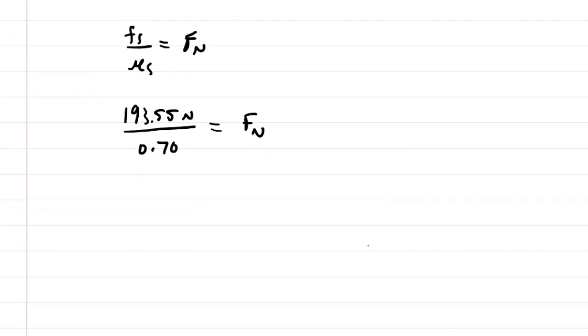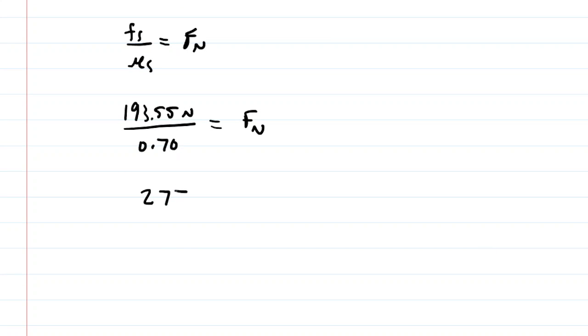We put that into our calculator, and we can see that the final answer to this question is about 277 newtons. That is the normal force that is exerted on the thumb, as well as on the opposite finger of the stuntman's hand.